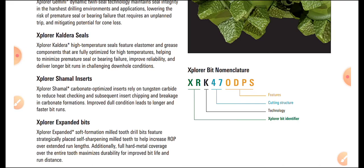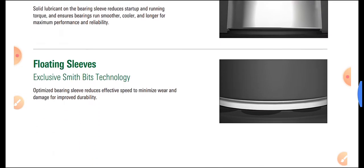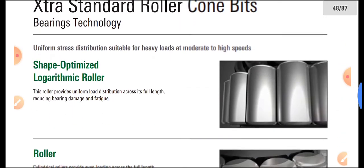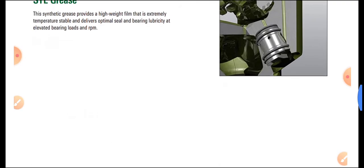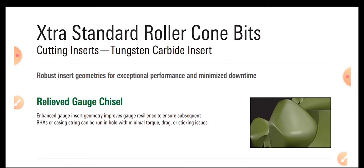The roller cone bit has nozzles and rollers visible on its body. The cutting inserts used are TCB — Tungsten Carbide Robust Inserts. There are several insert types available for roller cone bits.